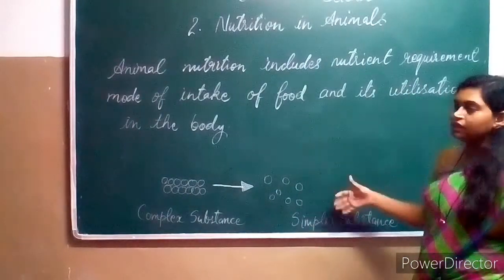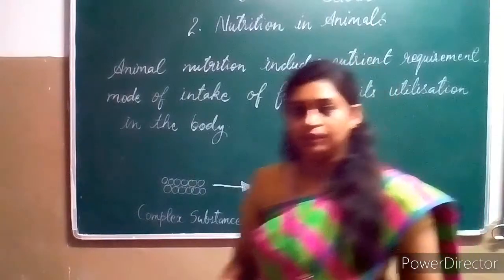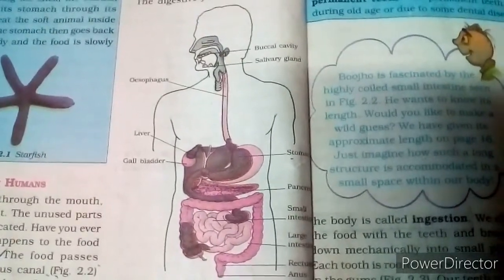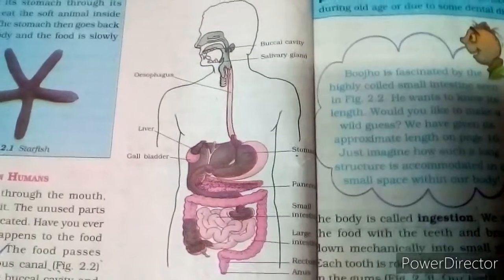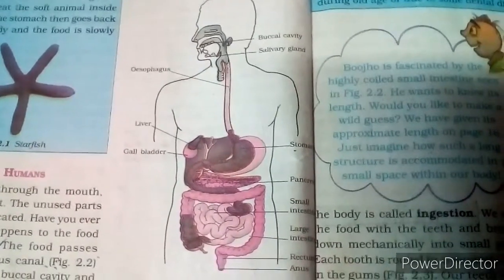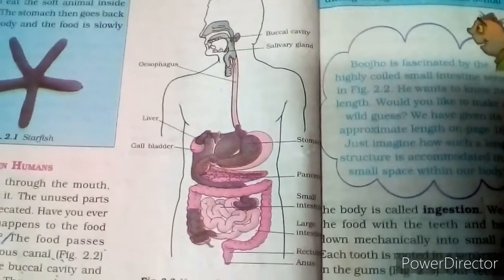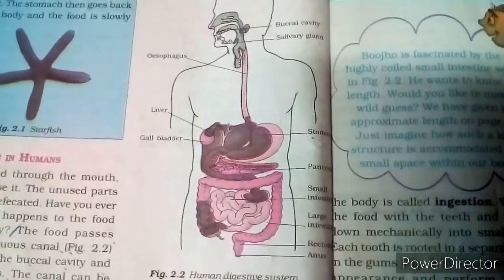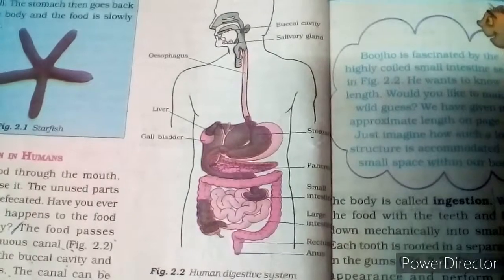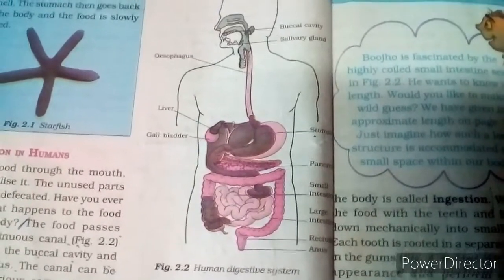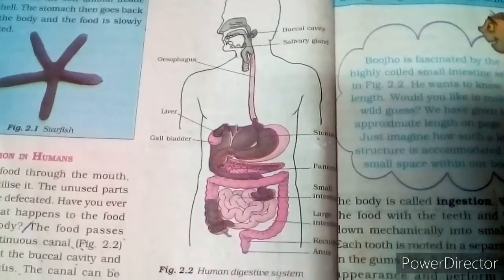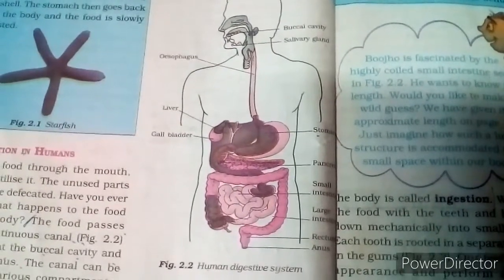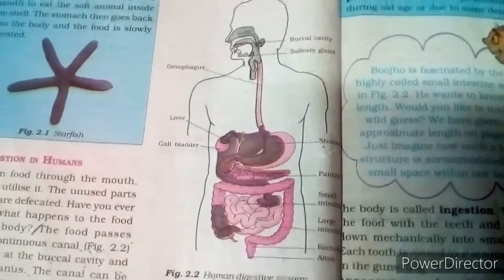The food passes through a continuous canal which begins at the oral cavity and ends at the anus. The canal can be divided into various components: the oral cavity, the food pipe — which is also known as the esophagus — and the stomach.